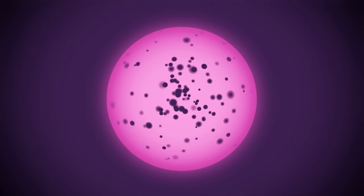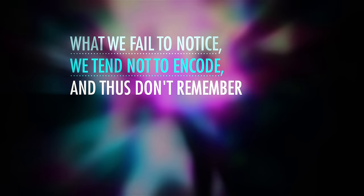Sometimes forgetting something just means it never really got through your encoding process in the first place. Think of all the stuff going on around you at any given moment — we only notice a fraction of what we sense, and we can only consciously hold so many bits of information in mind at any one time. So what we fail to notice, we tend not to encode, and thus don't remember. Bernice noticed a dark jacket, Beyoncé, and bananas, but she didn't encode much about the driver or the color of the thief's shoes.